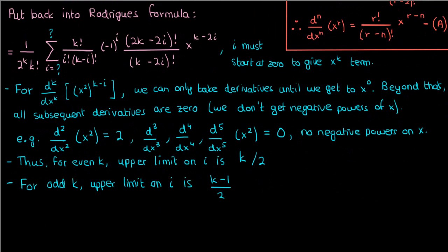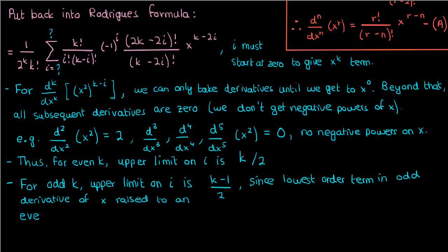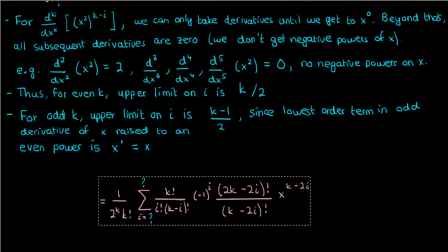This limit comes in when your k is odd, so you're taking an odd derivative of x raised to some even power, since 2k minus 2i is a multiple of 2 which makes it an even power. Now when you take an odd derivative of an even power of x, the lowest term you can get is x to the power 1, which is why the upper limit on i that occurs when k is odd is k minus 1 over 2.